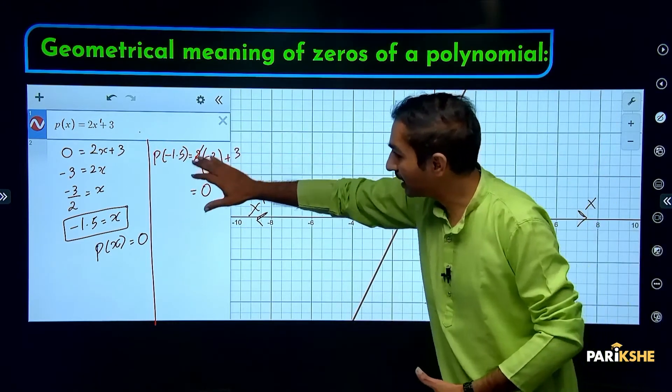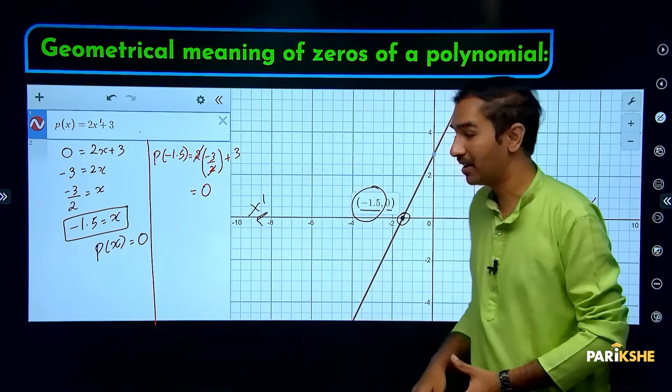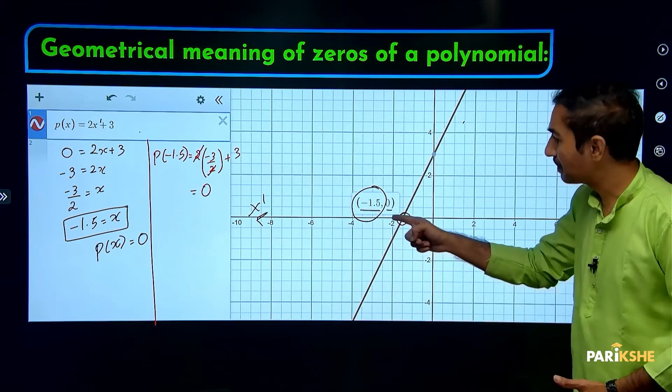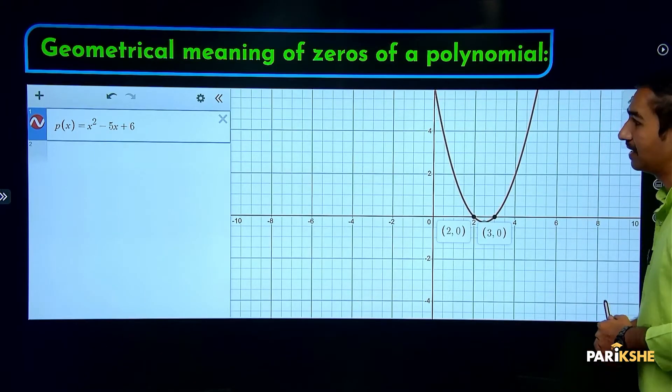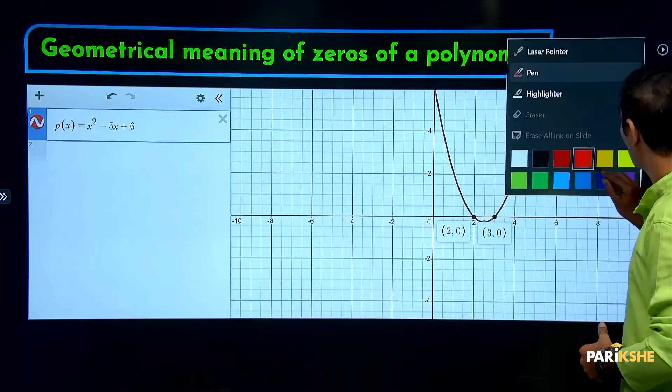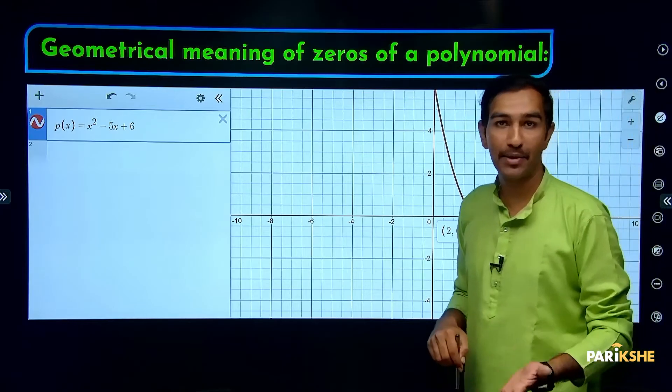So algebraically the answer we got is -1.5, and geometrically also the answer is -1.5. Next, let's take one quadratic polynomial.